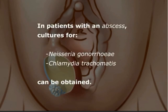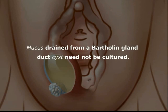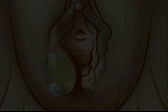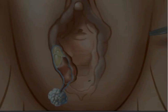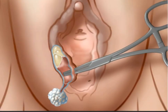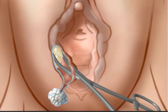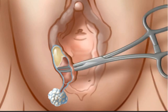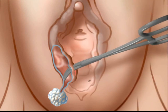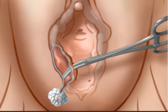For patients with an abscess, cultures for Neisseria gonorrhea and Chlamydia trachomatis can be obtained from spontaneously extruded pus. Mucus drained from a Bartholin gland duct cyst need not be cultured. The tip of a small hemostat is placed within the drain cavity and the tips are opened and closed to lyse adhesions and open loculations of pus or mucus within the cavity.